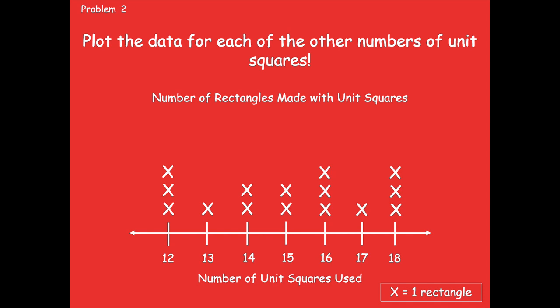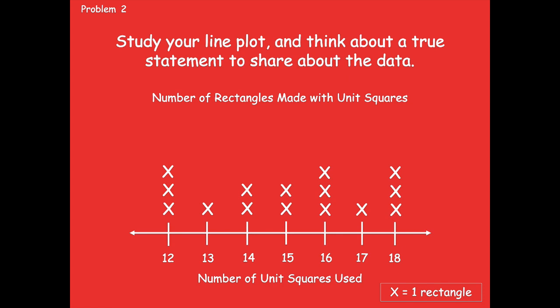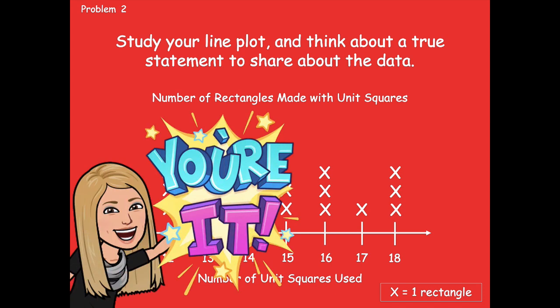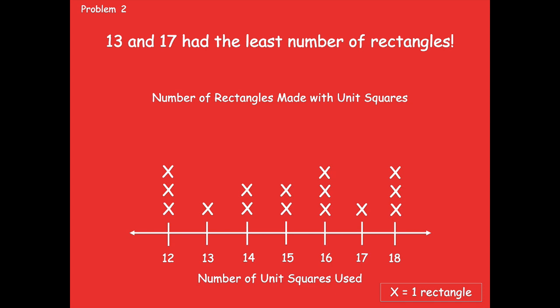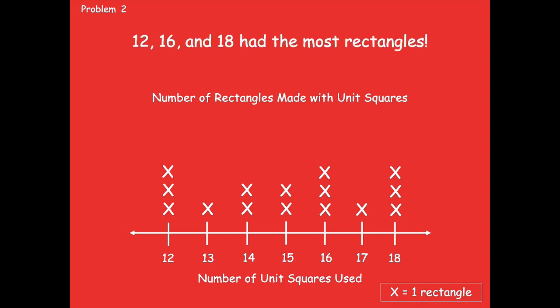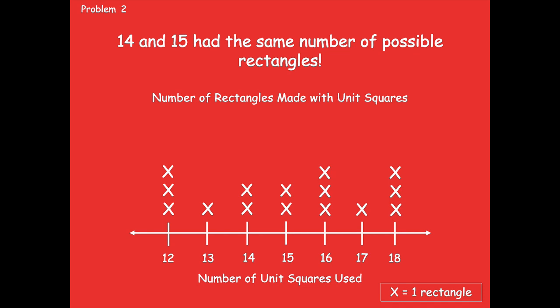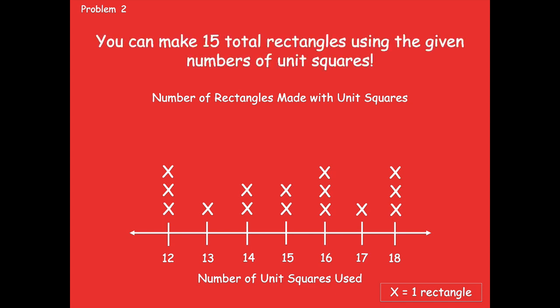Here's what I came up with. There was only one rectangle for 13, so one X. Two rectangles for 14, so two X's. Two rectangles for 15, so two X's. Three for 16, so three X's. Only one for 17, and three for 18. Pause the video and check that your line plot looks like mine. Then study your line plot and think about a true statement to share about the data — any one piece of information you want to share.